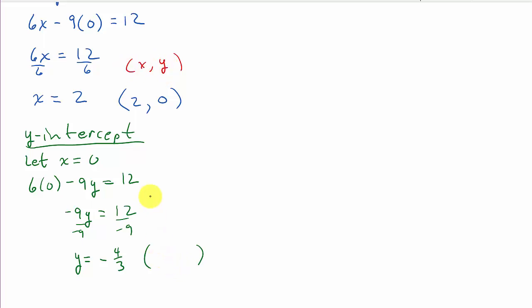Okay, well, what's my x coordinate? Well, x was 0. Now, what's my y coordinate? y is negative 4 thirds. So there's my y intercept. And this one's my x intercept.